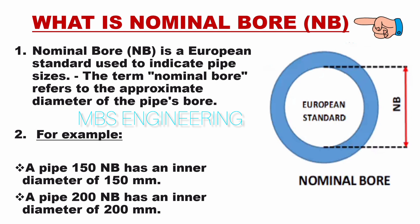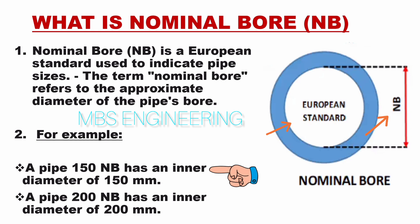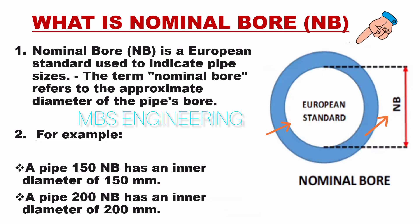Next, we will understand what is nominal bore, NB. The nominal bore is a European standard used to indicate pipe sizes. The term nominal bore refers to the approximate diameter of the pipe's bore. For example, a pipe with a nominal bore of 150 has an inner diameter of 150 millimeters, and a pipe with a nominal bore of 200 has an inner diameter of 200 millimeters.